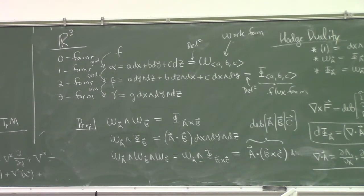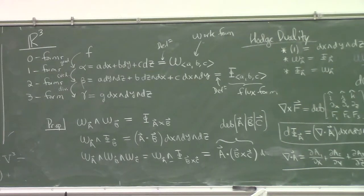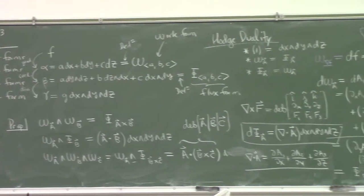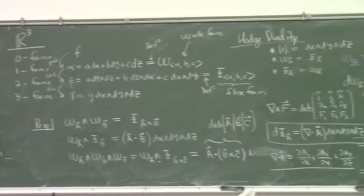But basically, I said these are the algebra identities for the wedge product. They give us cross product, dot product, even the triple product.